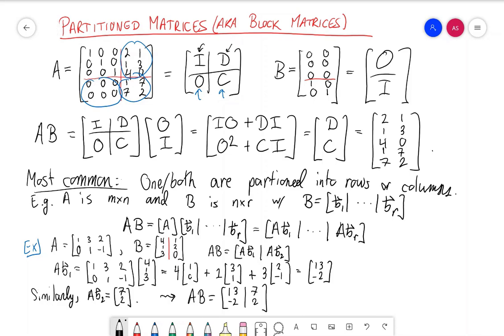Note that we can also do the exact same thing where we use rows instead of columns, where we partition A into rows and then get, so if we partition A into rows like [A1...Am].